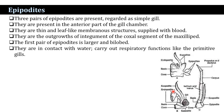The second category is the epipodites. There are three pairs of epipodites present, regarded as simple gills, and they are present in the anterior part of the gill chamber. They are thin, lip-like membranous structures supplied with blood, and are outgrowths of the integument of the coxal segment of the maxillipeds. The first pairs of epipodites are larger and have a bilobed structure. They contact water and carry out respiratory functions just like primitive gills.